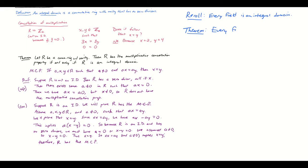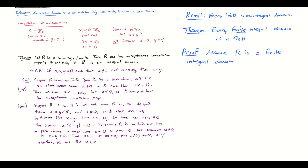Here's the theorem: every finite integral domain is a field. Here's the proof. Assume R is a finite integral domain — it's commutative and has unity, satisfying two of the necessary conditions for being a field. We just need to prove that every non-zero element of R has a multiplicative inverse. Let x be a non-zero element of R; we will show that x has a multiplicative inverse in R.